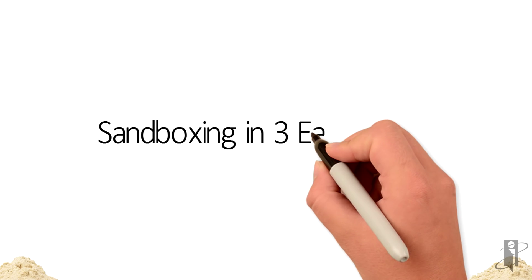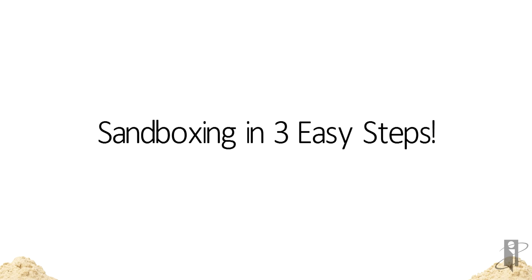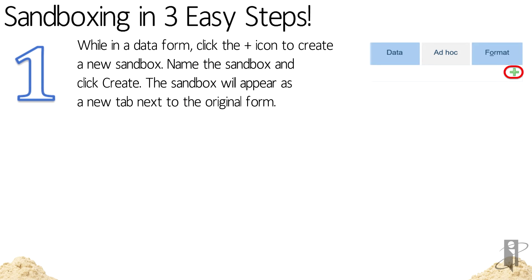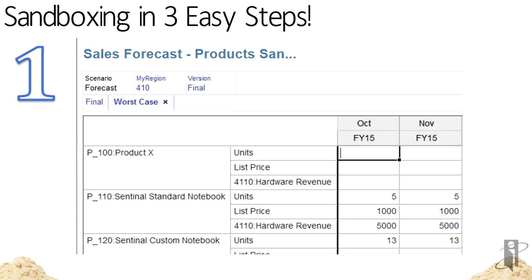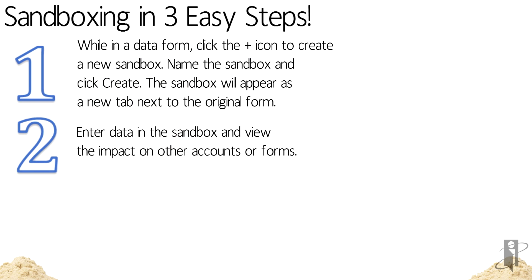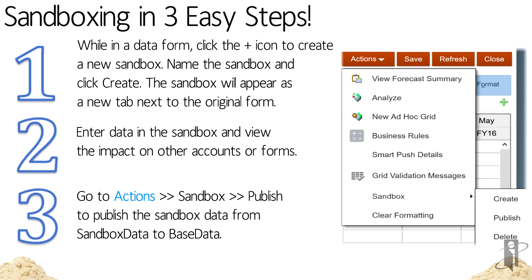Now that everything is set up, it's time for users to play in the sandboxes. This can be done in three easy steps. Open a data form and click the plus icon to create a new sandbox. Name the sandbox and click Create. You will see the sandbox as a new tab next to the original form. Enter data in the sandbox and view the impact on other accounts or forms. When you are ready, go to the Actions menu, hover over the sandbox option, and click Publish to move the data from Sandbox Data to Base Data. All modified data from the sandbox will be published — that includes data across different POVs or pages and across different forms.